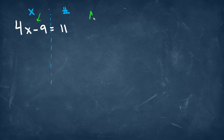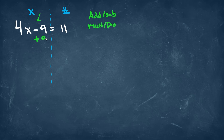We always start with addition and subtraction, and then we'll go into multiplication and division second. Since we have a minus 9, we always want to do the opposite of what we have, so we're going to add 9 on that side. And if we add 9 on the left side, that's going to mean that we have to add 9 on the other side. By adding 9 to this minus 9, we'll change this to 0, effectively cancelling this out. On the other side, we'll have 11 plus 9, which will give us 20.